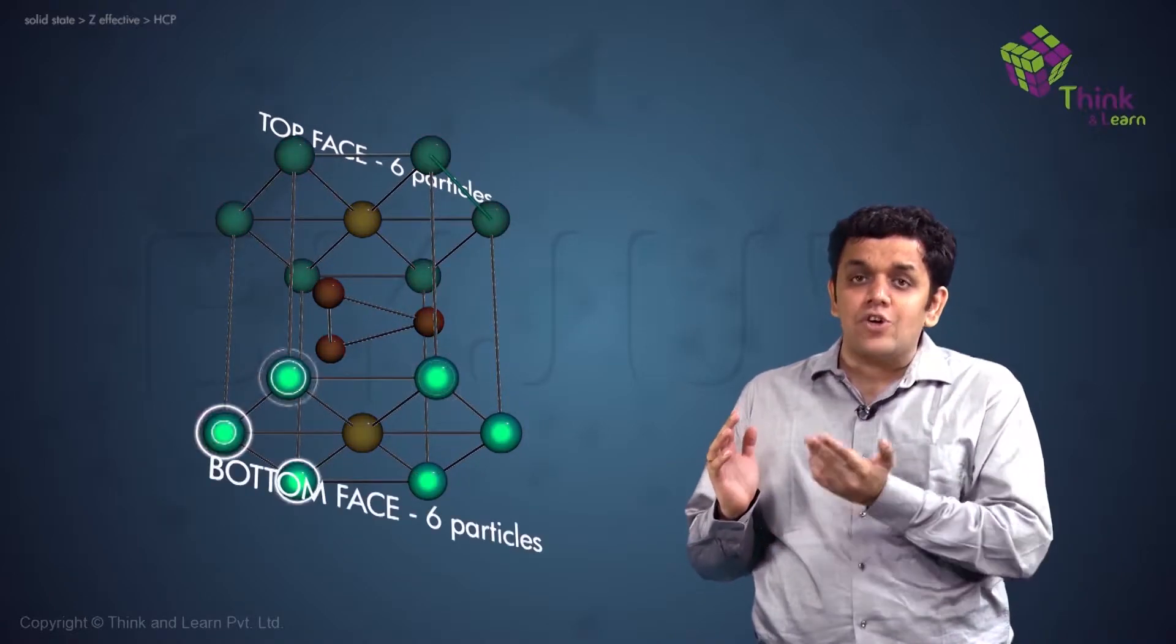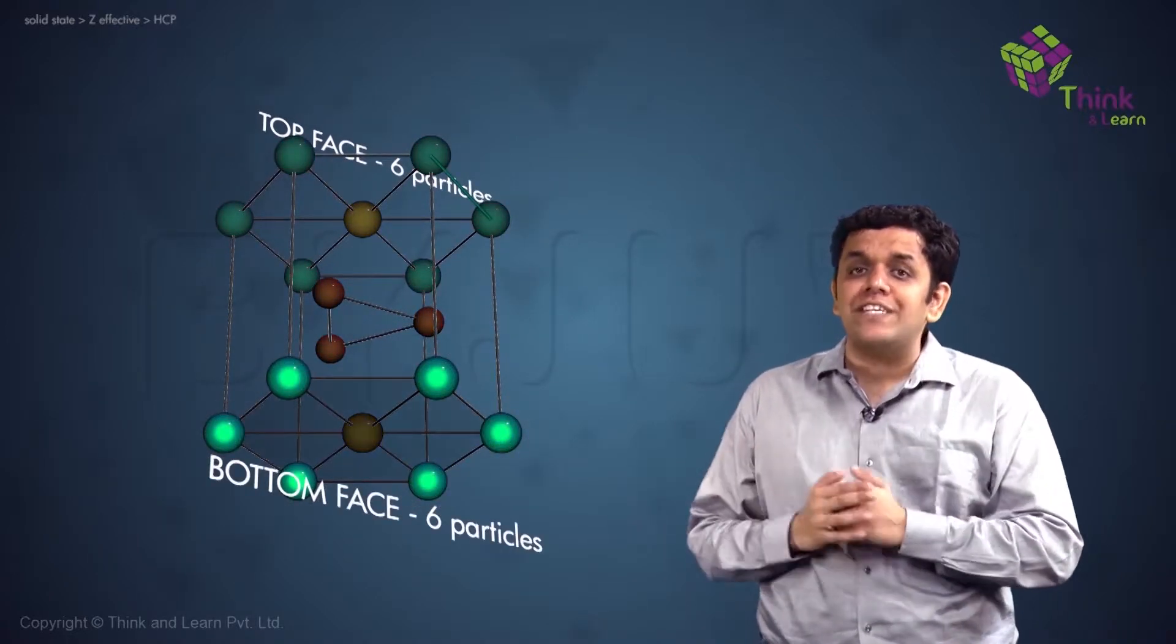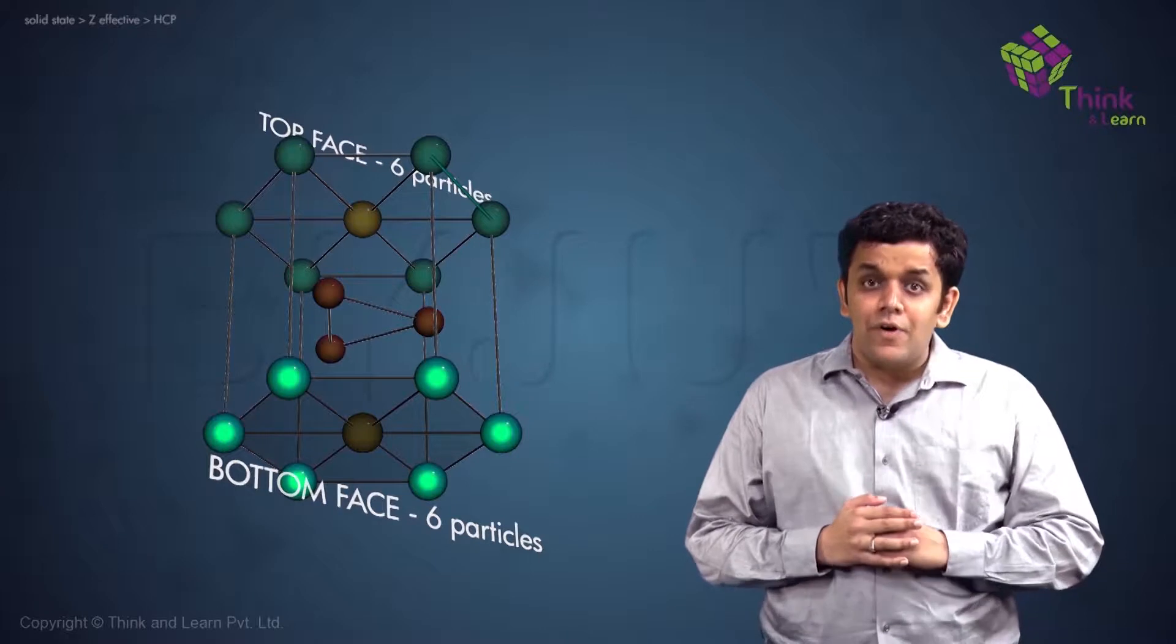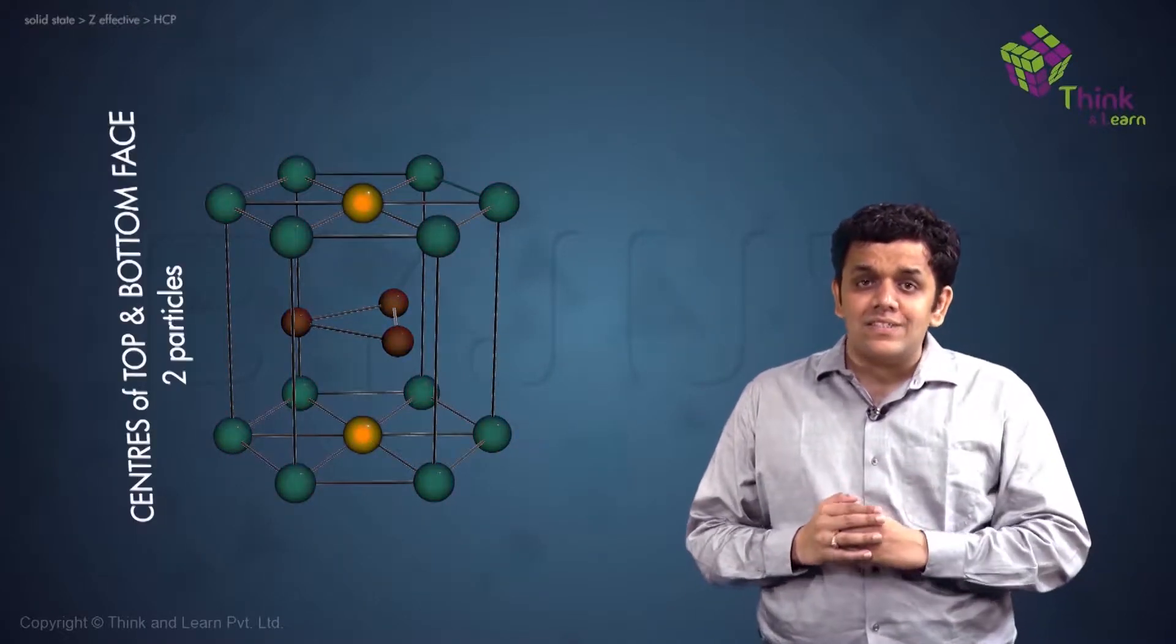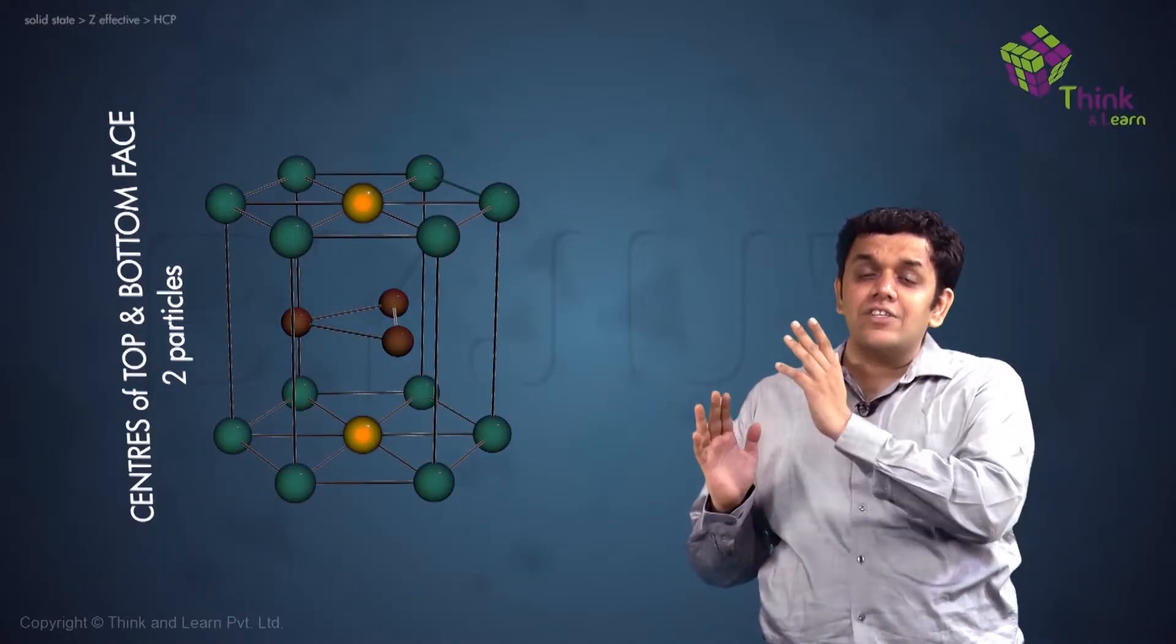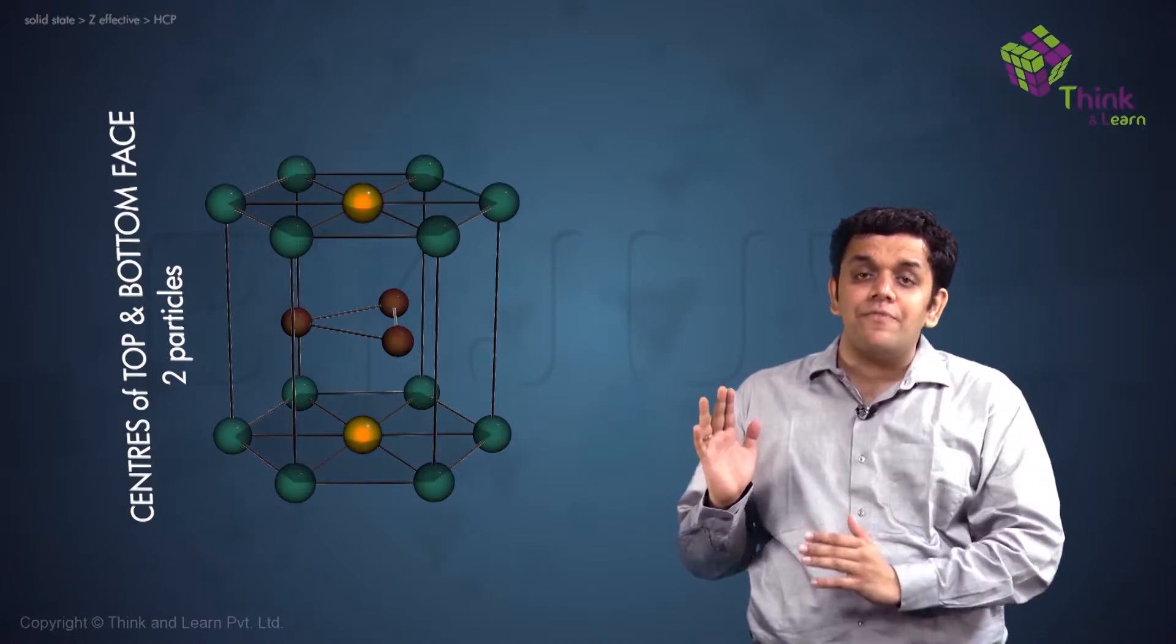Similarly, there are six particles on the corners of the bottom face of the hexagon. Further, there are two particles occupying the centers of the top face and the bottom face of the hexagon.